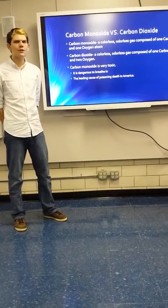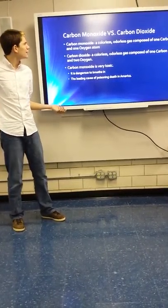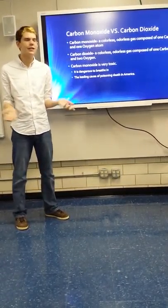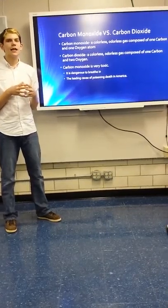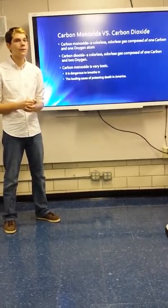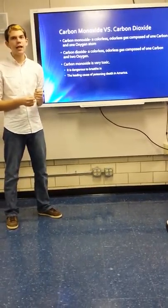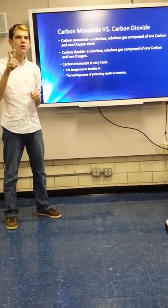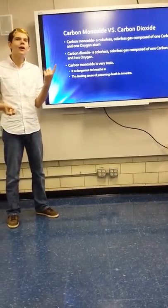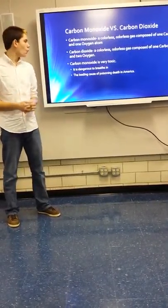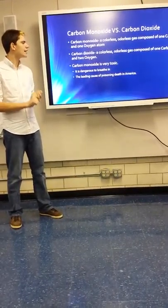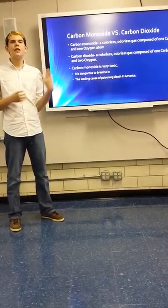So, carbon monoxide versus carbon dioxide. What exactly are the differences? I mean, they both have carbon and they both have oxide. But what is the mono and DO? How does that change anything? Well, carbon monoxide is a colorless and odorless gas that is composed of one carbon atom and one oxygen atom, whereas carbon dioxide is composed of one carbon atom and two oxygen atoms, but it is also a colorless and odorless gas. Now, how exactly does the one oxygen atom affect your thing? Well, carbon monoxide is very, very toxic to you. It is dangerous for humans to breathe in, and it is the leading cause of poisoning death in America.